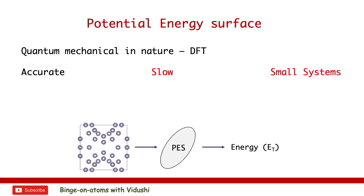Potential energy functions come in different variations and varieties with different physical motivations. For even a single element, a variety of potentials in different functional forms have been developed. The concept of the potential energy surface is founded on the Born-Oppenheimer approximations of quantum mechanics. If the atomic positions, nuclear charges, and total charges are known, the potential energy of a system is fully defined by its Hamiltonian. These computations are very computationally demanding and thus are restricted to small atom configurations and simulation times.